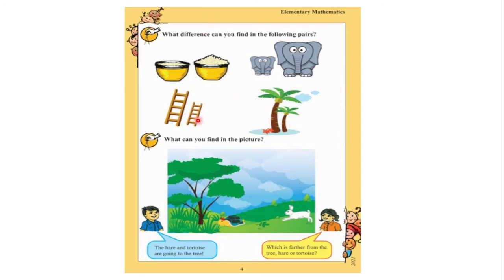If we look at this next photo, we can see a rake — also called a harrow or a ladder. There are a lot of names for it. One is tall or big, and the other is short. So one is a big ladder and the other is a small ladder.